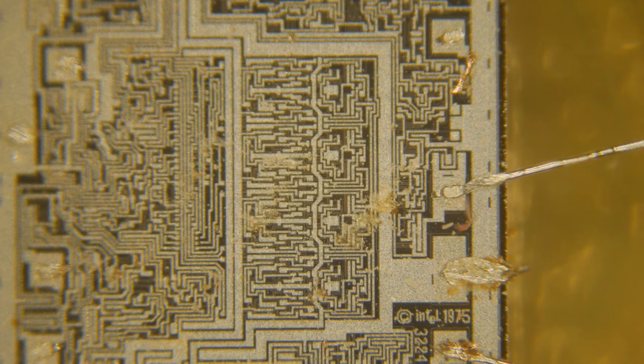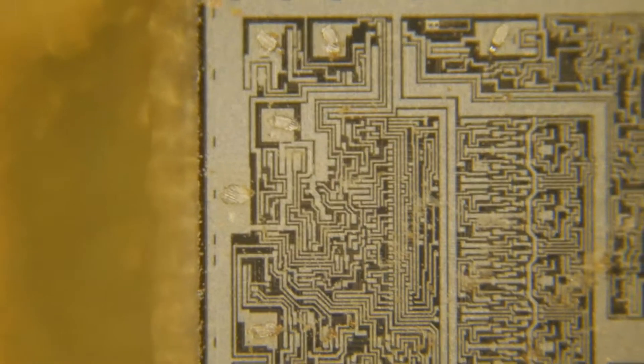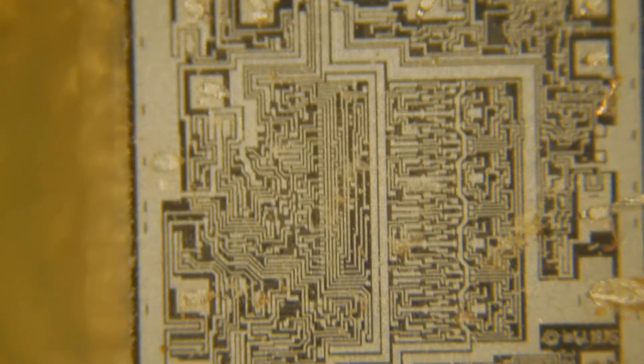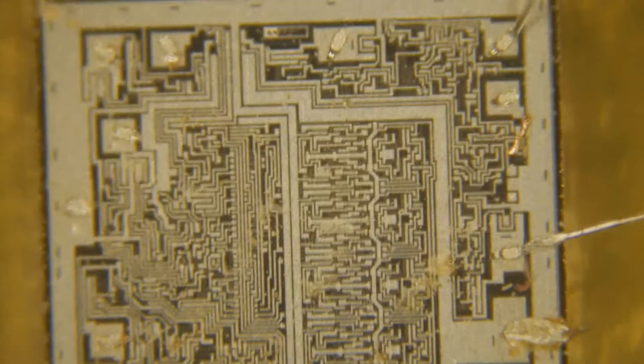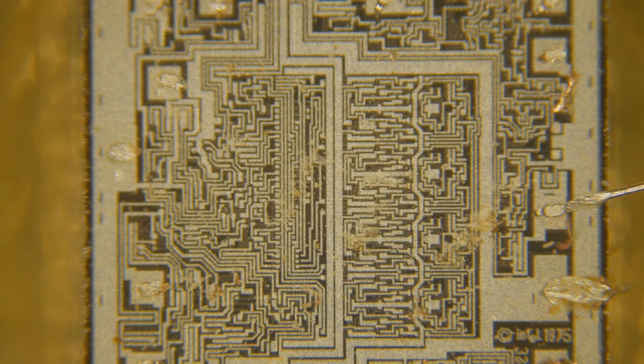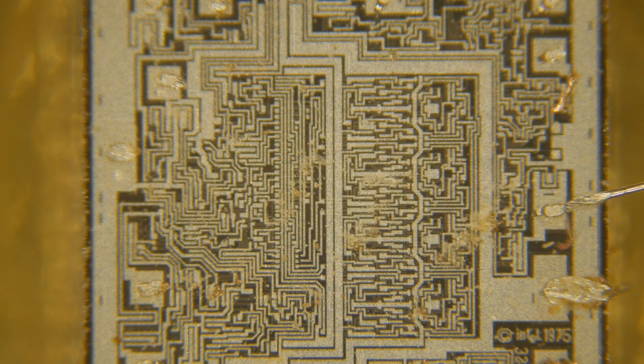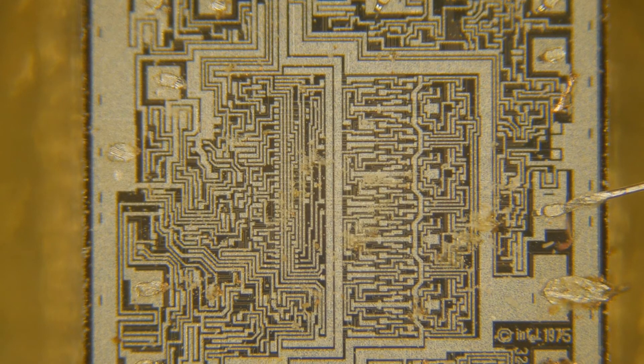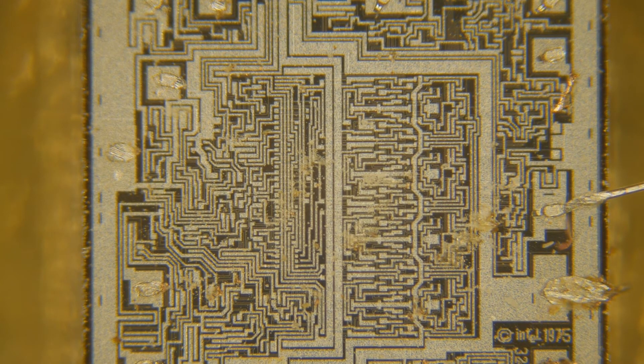And then this section over here, I don't know, I'm just kind of guessing. It looks kind of messy over here so I'm not sure what all that is. There's some other circuitry on the 8224 for reset and other things, so that might be stuff I don't know about.